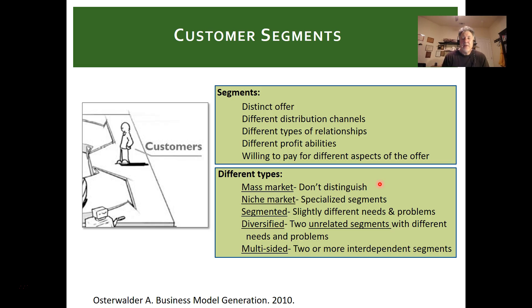Those relationships may be a selling-buying relationship or an influencing relationship. Different segments also have different profitabilities and different willingness to pay for aspects of the offer — as we see with tiered value propositions like LinkedIn, where you have basic, pro, and premium plans.